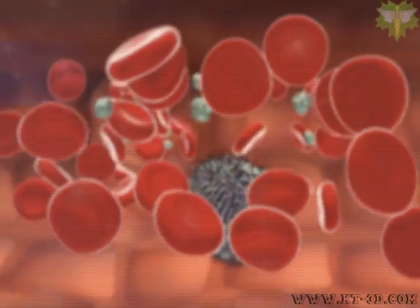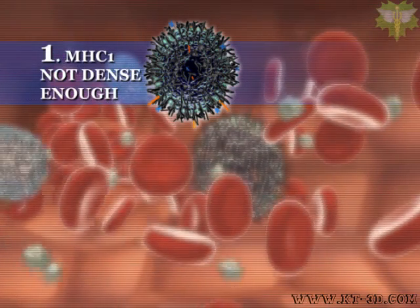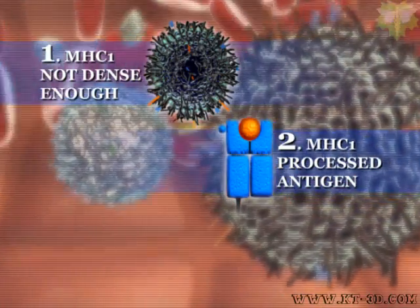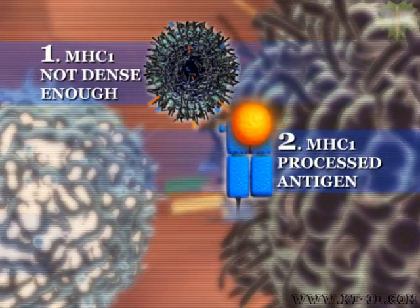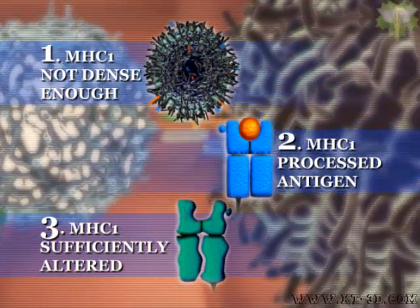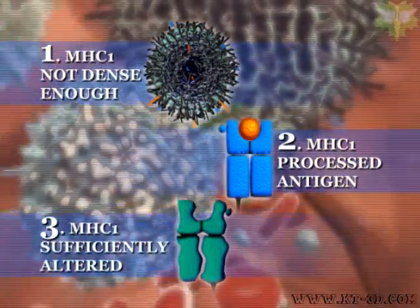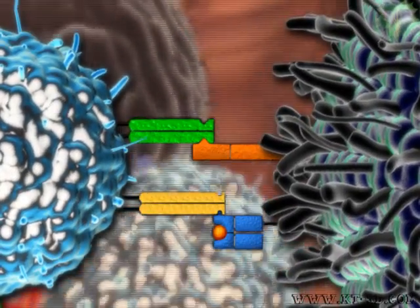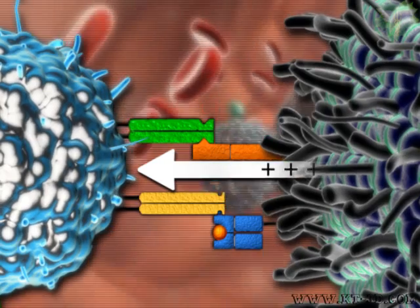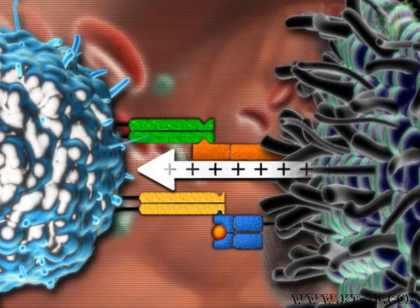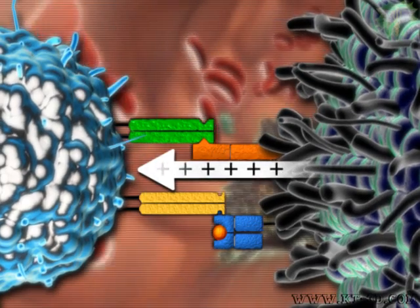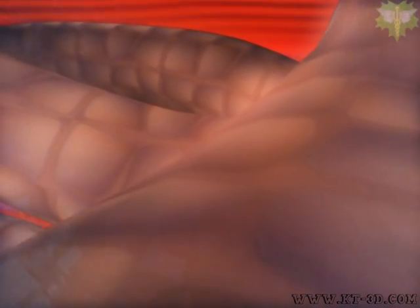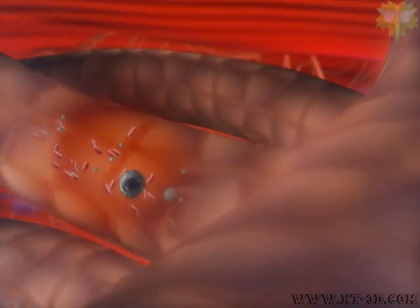However, if the MHC1 is: one, not dense enough on the target cell; or two, if the target cell has processed antigen and displayed it in the pocket of the MHC1, illustrated here by the shaded red-yellow ball; or three, if the conformation of the MHC1 proteins has been sufficiently altered, noted here by the striped MHC1 proteins — then the binding of the altered MHC1 to the inhibitory natural killer cell receptor will send a positive signal to the activation natural killer cell receptor complexed to the target cell activating ligand. It is this positive signal that initiates the remarkable cytotoxic machinery of the natural killer cells.